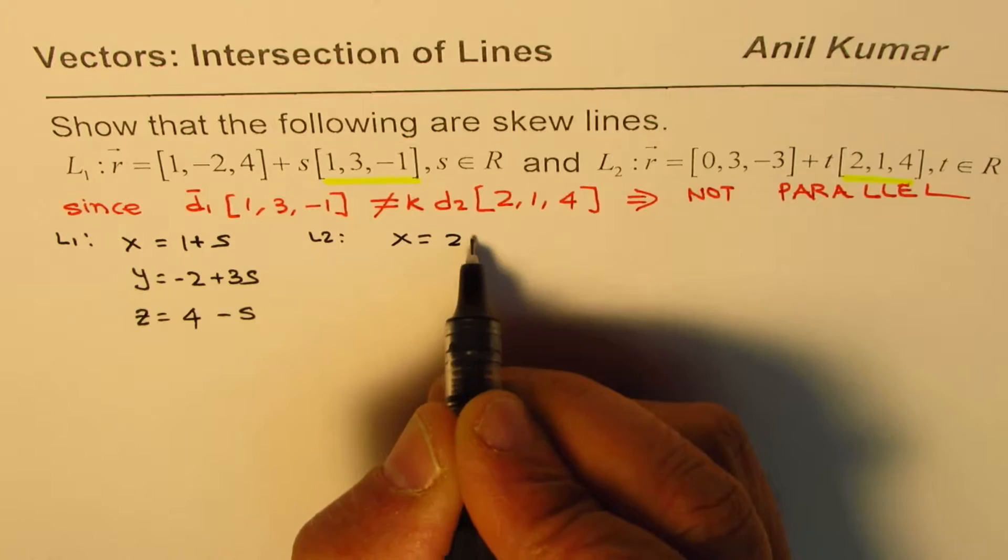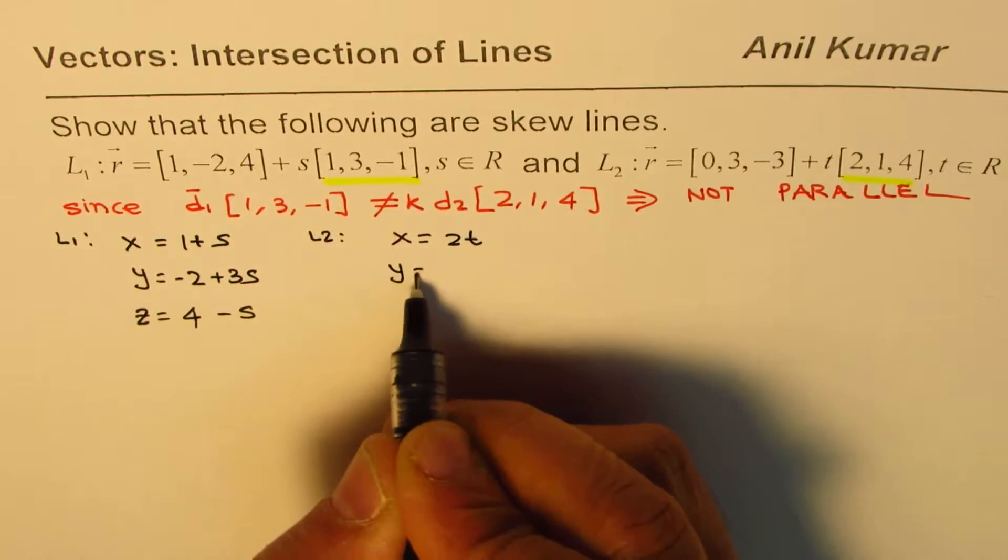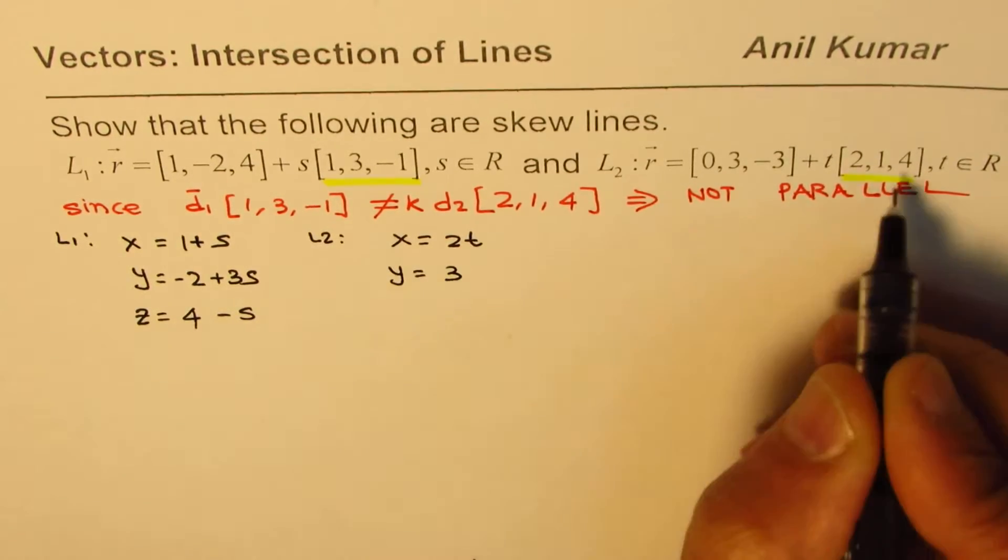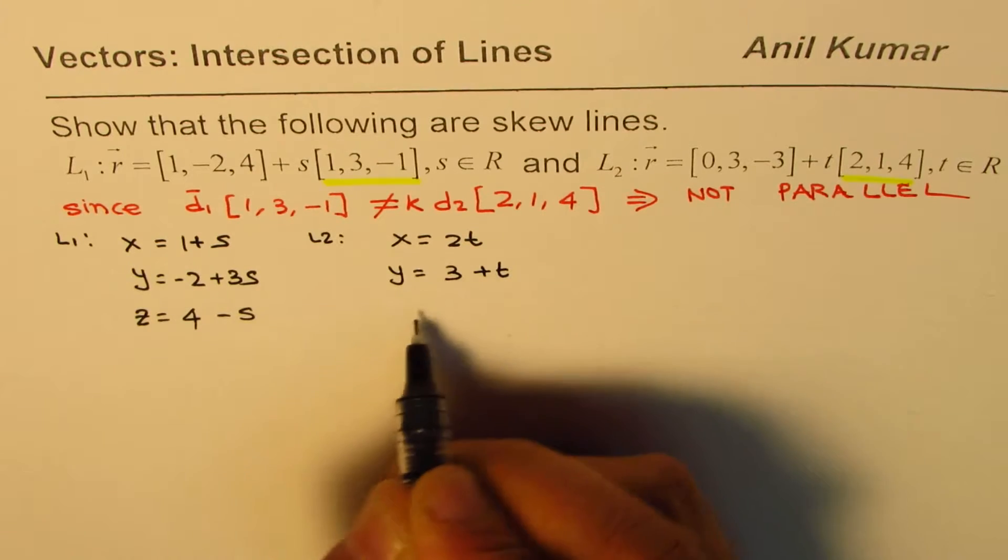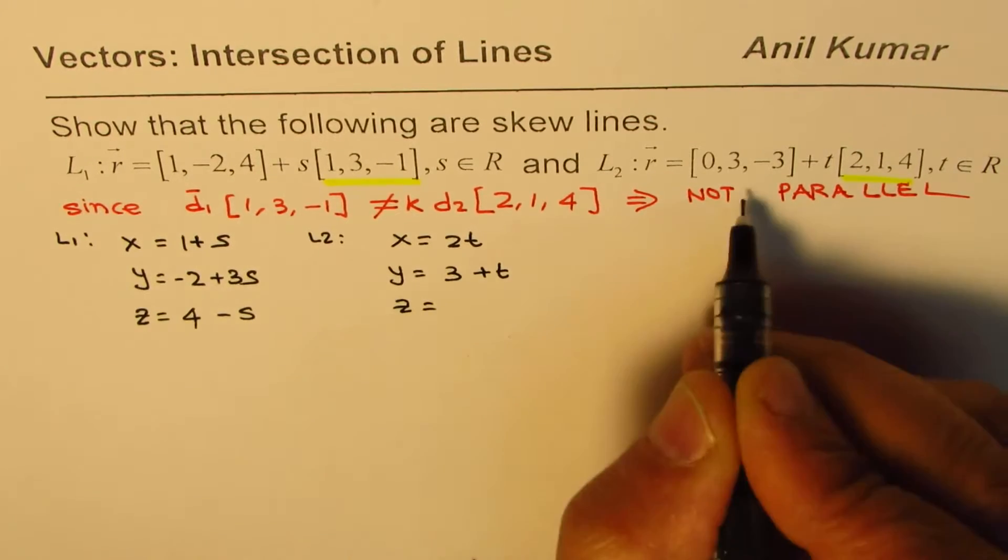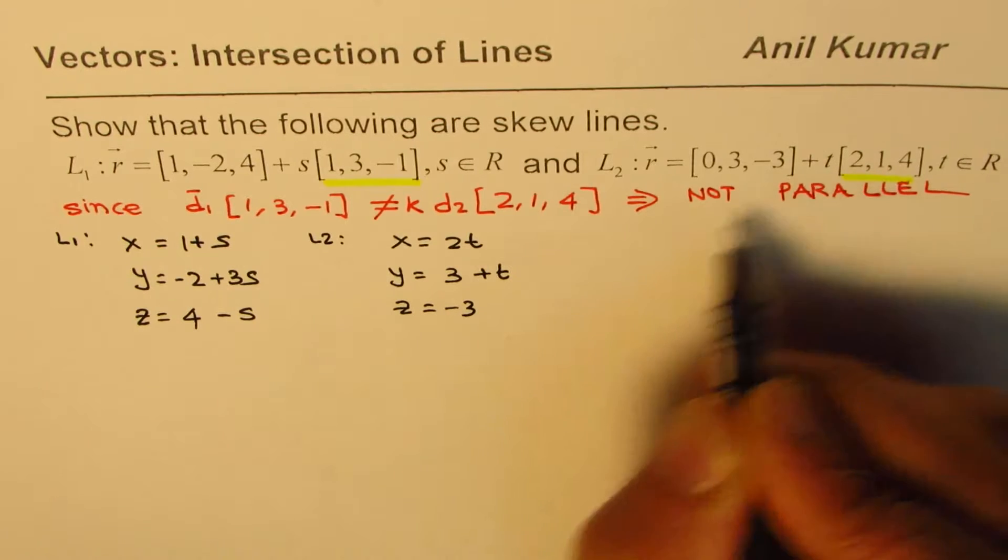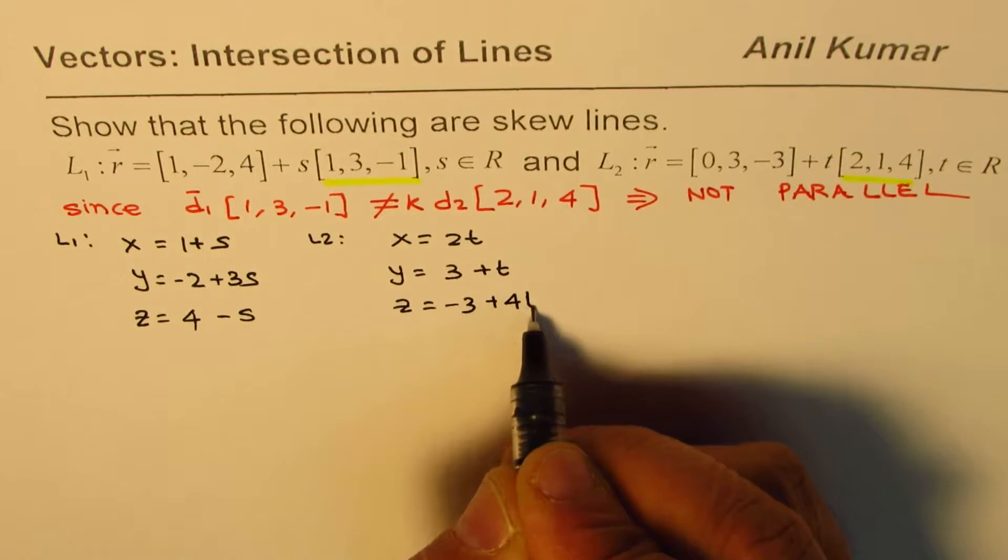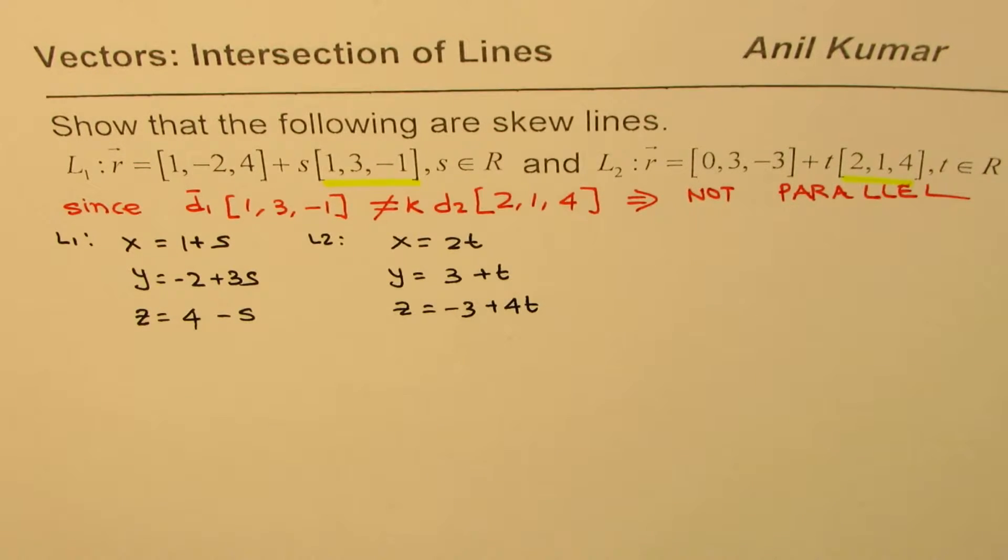For line 2, x equals 2t, y equals 3 plus t, and z equals minus 3 plus 4t.